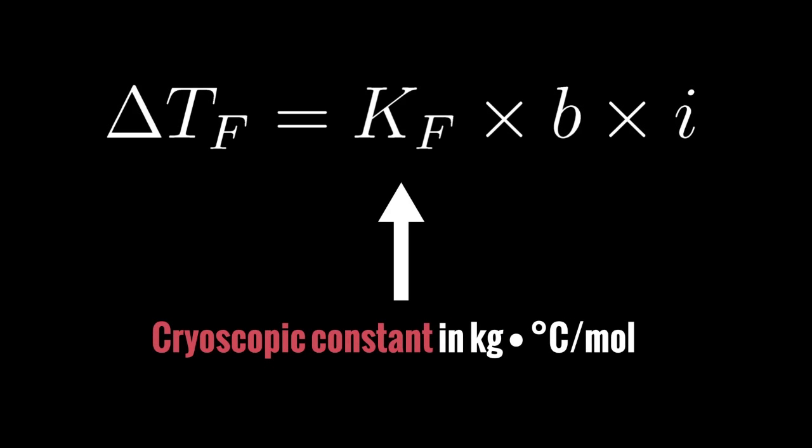We have this k sub f, which is the cryoscopic constant in kilograms degrees Celsius per mole. And you can calculate the cryoscopic constant by using this formula right here. You start with R, the ideal gas constant. We discussed the ideal gas constant in a previous video on the ideal gas law, and we gave a couple of values for the ideal gas constant, so you might want to look at that before you watch this presentation.